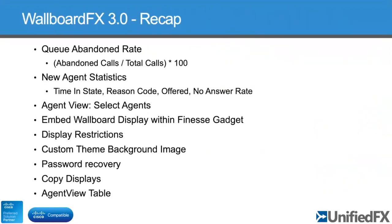Just a quick recap on the features added back in version 3. There were some more statistics added in terms of abandoned calls from the queue, some new agent statistics and reason codes — something we get asked quite a lot for, in time and state. We also added a new agent view update where you could select individual agents rather than just seeing all agents within a particular queue. We also made it possible to embed our wallboard display inside Finesse as a gadget.